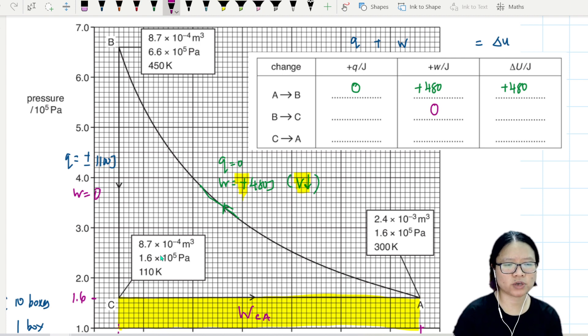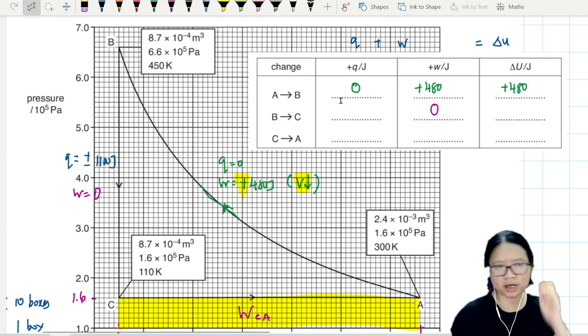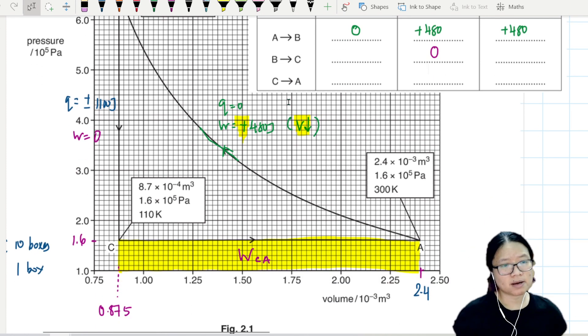B to C: no change in volume, so w will be zero. What about this q? Don't know yet, I'm gonna leave it empty. Is it plus, is it minus? Don't know. But I do know the w from C to A. This one just now we calculated as 244. I'm gonna put 240 to stick to 2 sig figs.